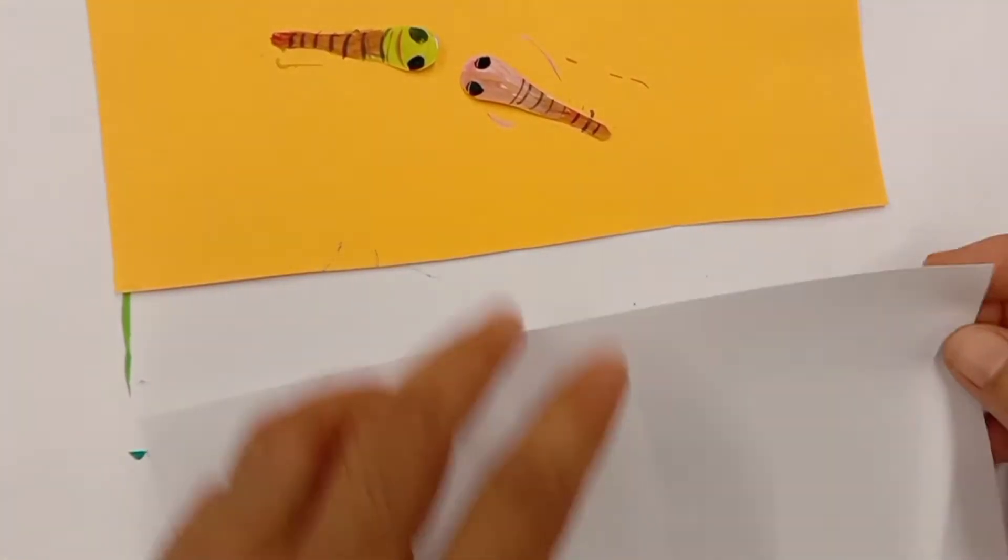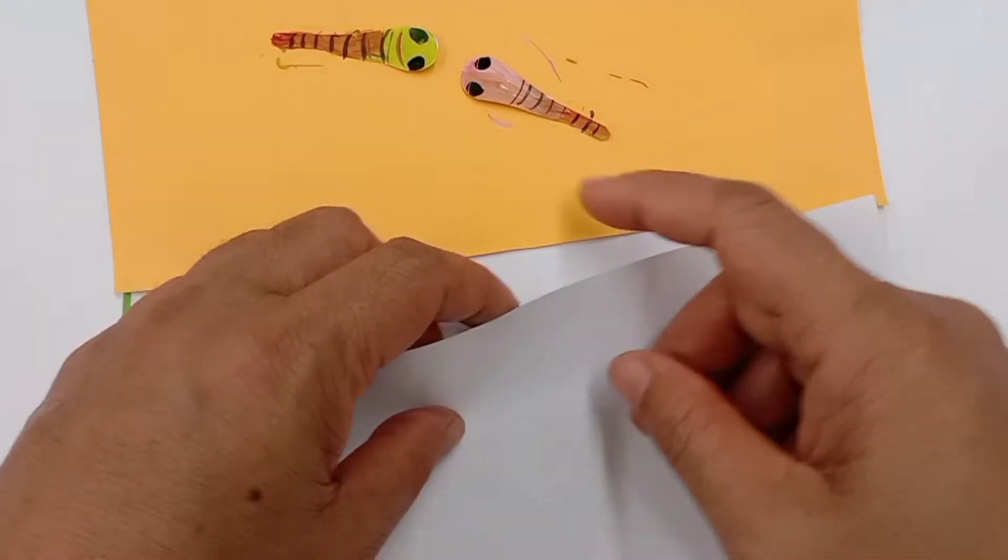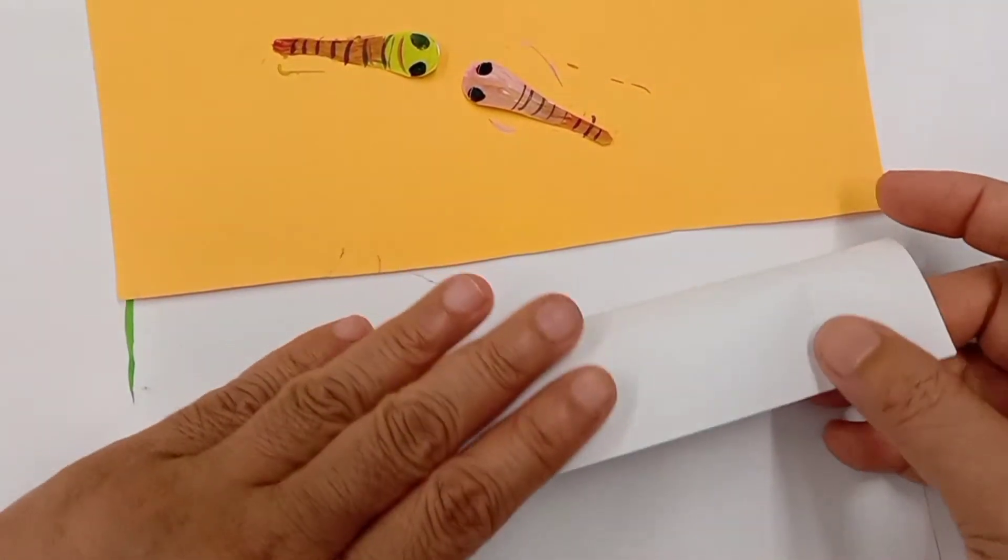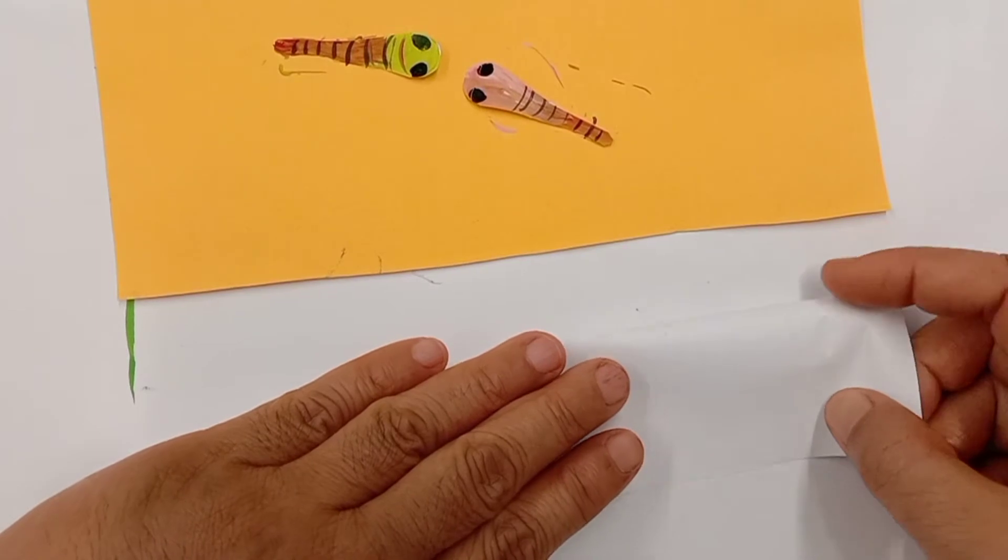We're going to make the wings. So to do that, we fold. We're going to make eight, so we fold first.